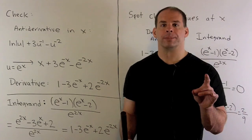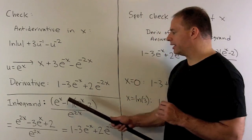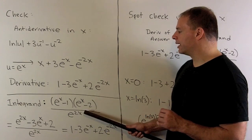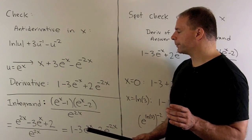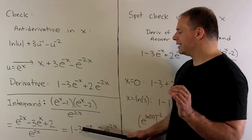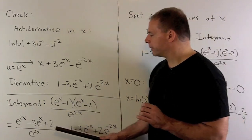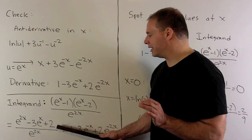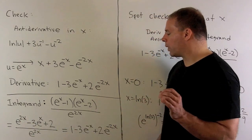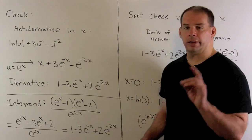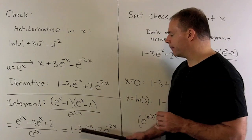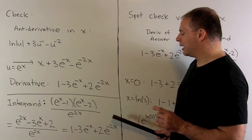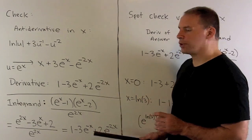I want this equal to the integrand, so we'll take our integrand, e to the x minus 1, e to the x minus 2 over e to the 2x, and then we simplify. So we multiply out the top, divide by e to the 2x, so it's going to subtract 2x there, subtract 2x there, gives us e to the minus 2x here. So I wind up with a 1, that's going to be e to the 0, then minus 3e to the minus x plus 2e to the minus 2x. And we see that these agree, so that checks my work.